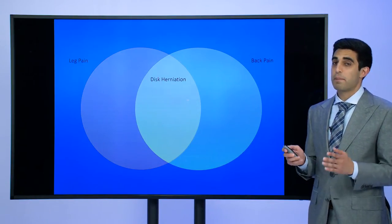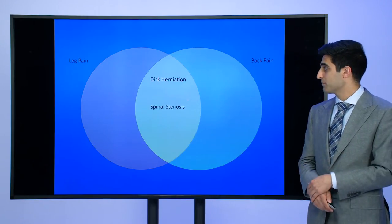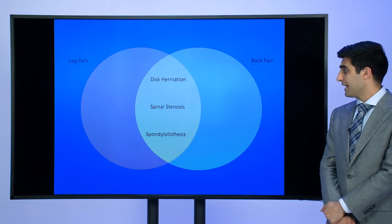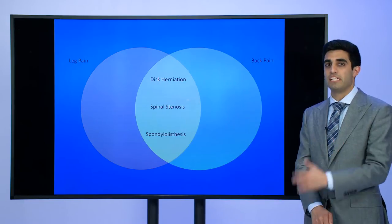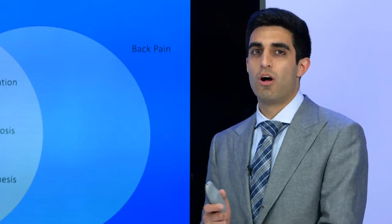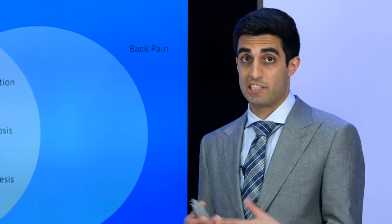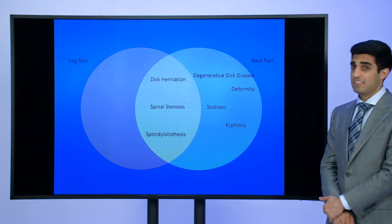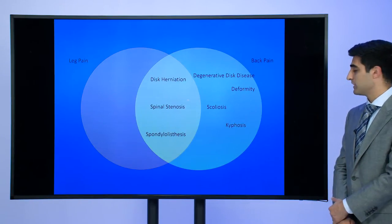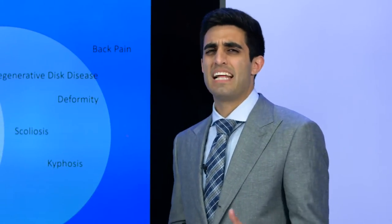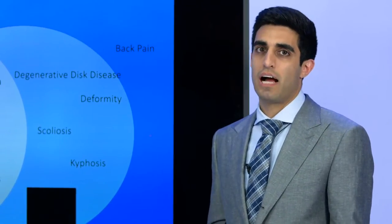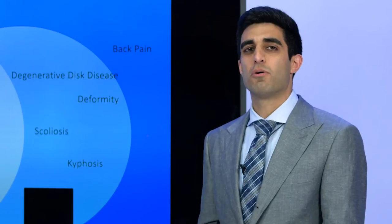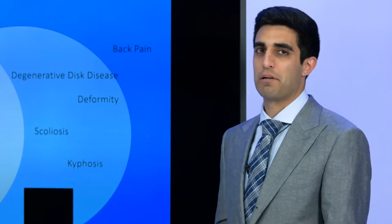Things that can cause both leg pain and back pain are disc herniations, spinal stenosis — which is a compression of the nerves within the lumbar spine — and spondylolisthesis, which is a bony issue where the bones that make up the spinal column are moving inappropriately, causing compression of the spinal nerves. Things that can cause just low back pain include degenerative disc disease, deformities, scoliosis, and kyphosis. There is also a large black box of patients with no identifiable cause for their low back pain.